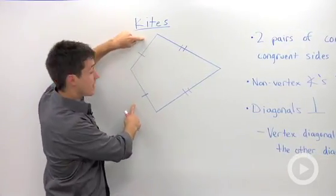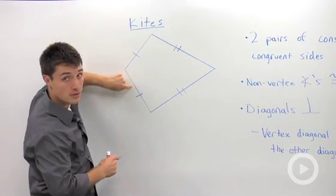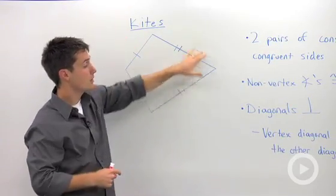Notice we have two consecutive sides here and they're both congruent, but these two sides are not congruent to this pair.